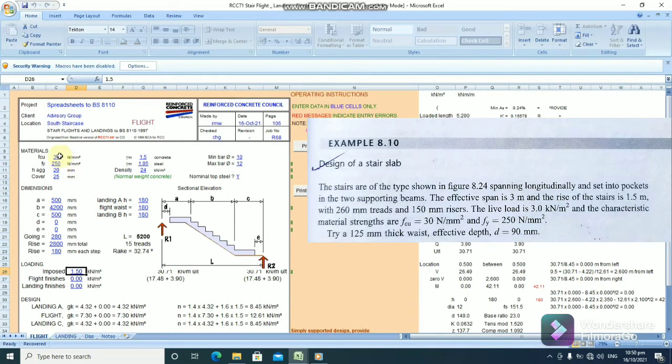Now, let's look at the material sections. fcu is 30. fy is 250. Concrete cover, let's leave the concrete cover at 25 mm.